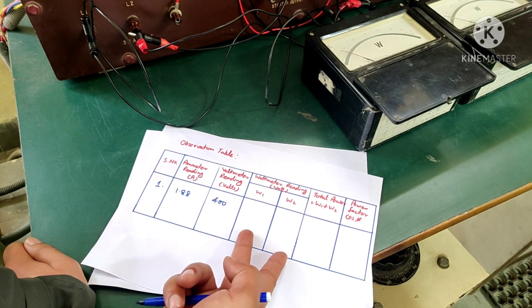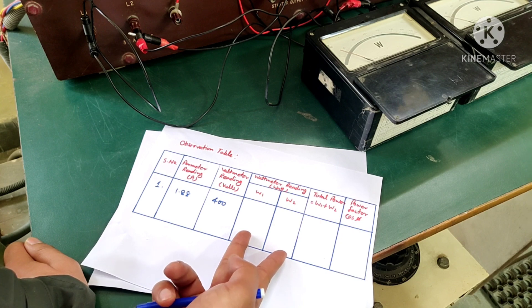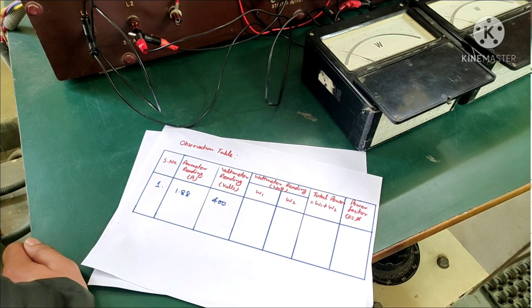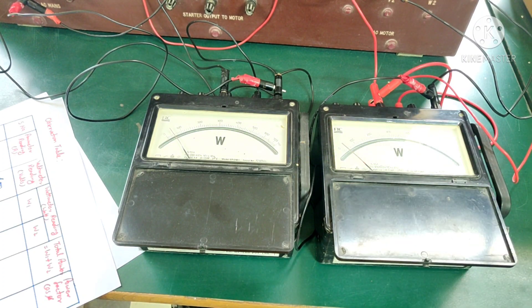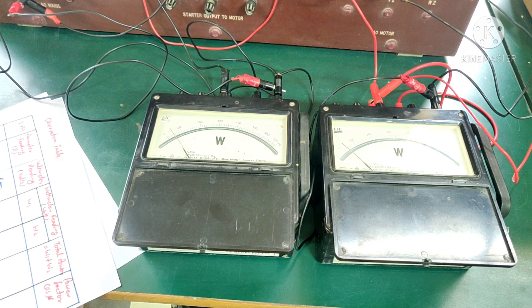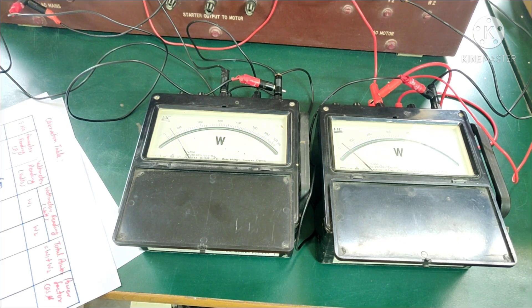So the next two columns will be decided by the reading of our two wattmeters. So wattmeter one is giving us 50 watts and wattmeter two is giving us 30 watts. But in case of wattmeter two, we will consider it as minus 30 watts because we have interchanged its connections.